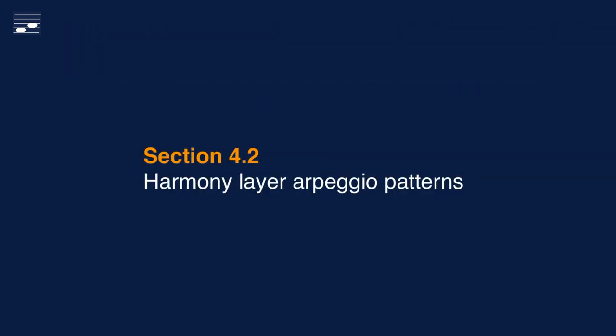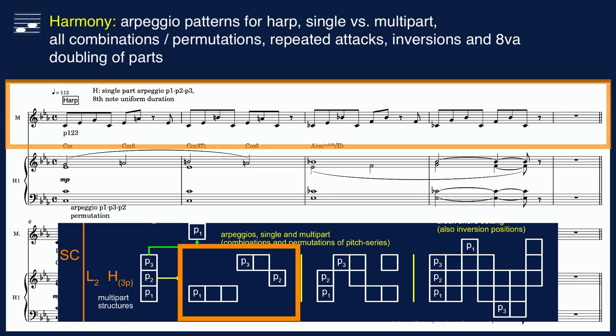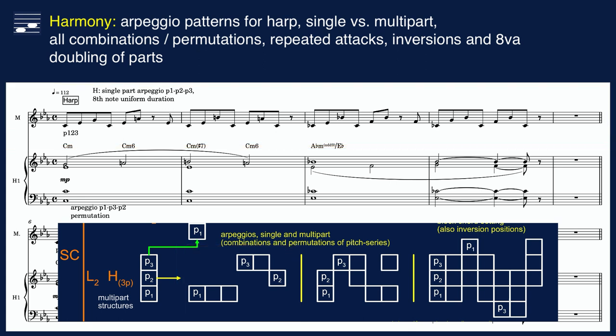The next typical case is writing for a harp, using arpeggio patterns based on a given harmony layer. The diagram shows various arpeggio pattern options, but here we start with single part patterns — a sequence of note attacks with either identical length or a more interesting non-uniform rhythm.